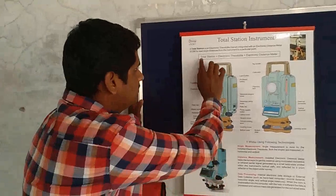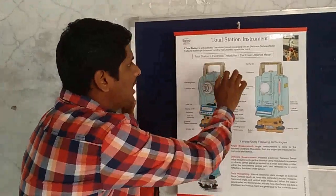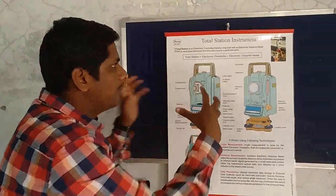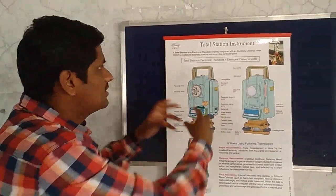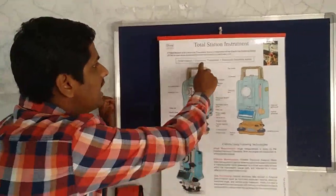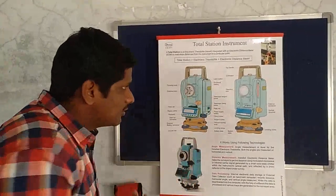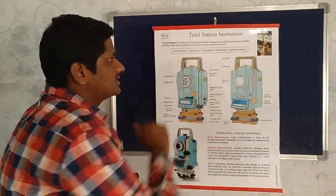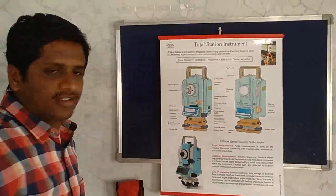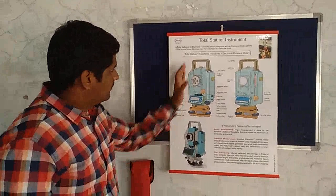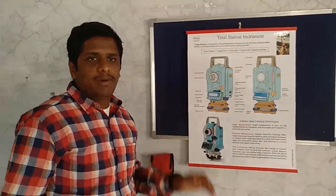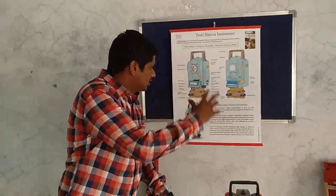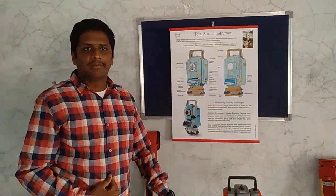So this total station is combined with these two — one is electronic theodolite and another one is electronic distance meter. We are learning about the different parts and also how we are using it in real applications.